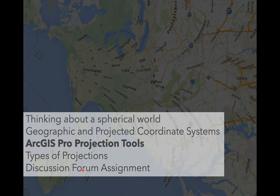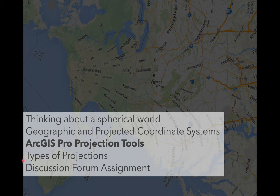Today I'll go through some quick things about thinking about the world in spherical terms. One of the more difficult aspects of conceptualizing projections is that we're so often accustomed to looking at geographic data in the planar two-dimensional versions — whether through our screens or through maps — that it can be difficult to conceptualize the world as a three-dimensional sphere. We'll talk about the difference between projected coordinate systems and geographic coordinate systems, go over specific ArcGIS projection tools, cover different types of projections and what they're used for, and then briefly introduce the discussion forum assignment.